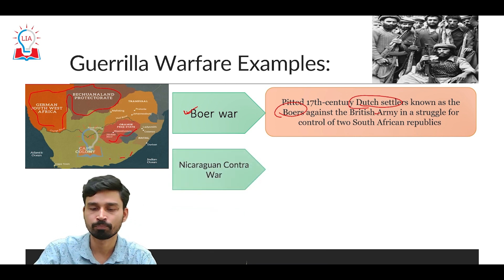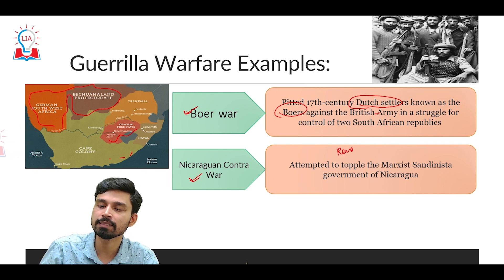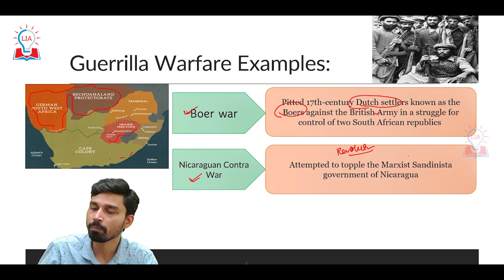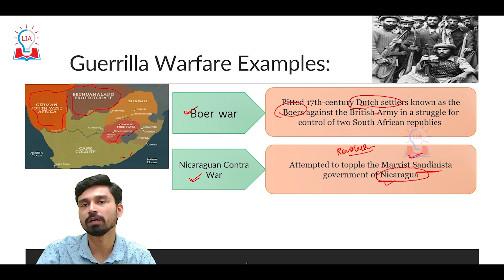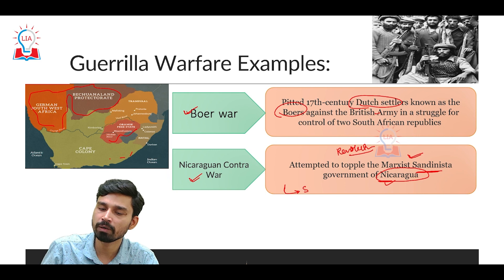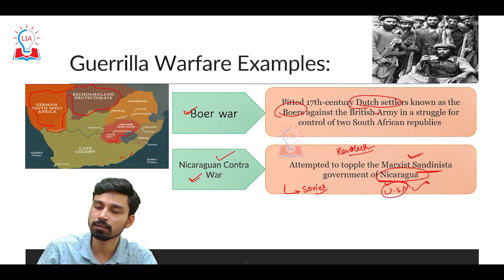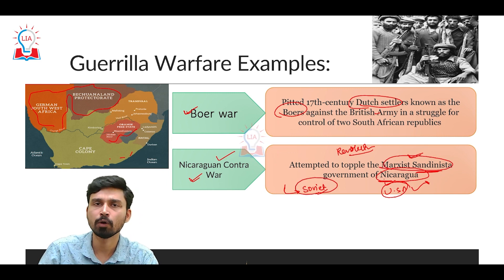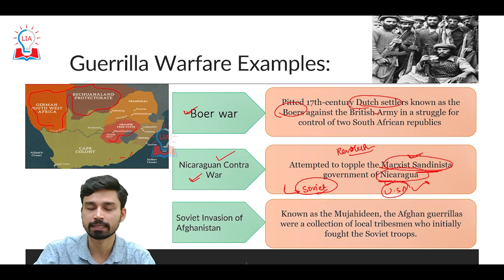Second, in South America, the Nicaraguan Contra War involved the Contras — revolutionaries opposed to communism — who sought to topple the Marxist Sandinista government of Nicaragua. This also became a proxy war between the Soviet Union, which supported communism and backed the Sandinista government, and the United States, which supported capitalism and backed the Nicaraguan Contras. Both sides eventually had to cease hostilities and the war ended.